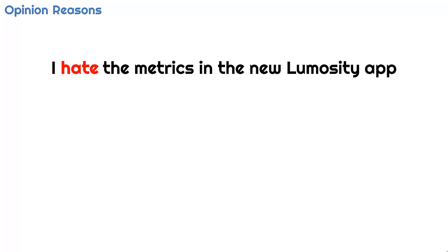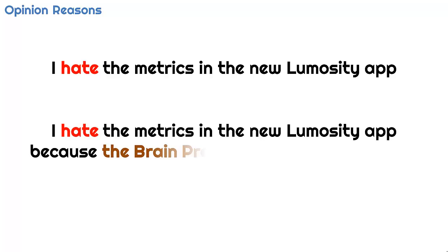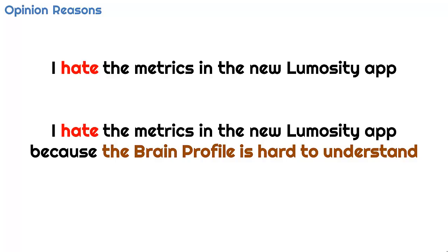Discovering the reasons for each opinion is important, because it may be these reasons that enable us to perform actions to remedy them. 'I hate the metrics in the new Lumosity app' is not as useful as 'I hate the metrics in the new Lumosity app because the brain profile is hard to understand.' The first sentence does not give the reason for the negative opinion about the metrics, making it difficult to know what to do to improve them. The second sentence is more informative, and the app maker can use this information to improve their brain profile report.